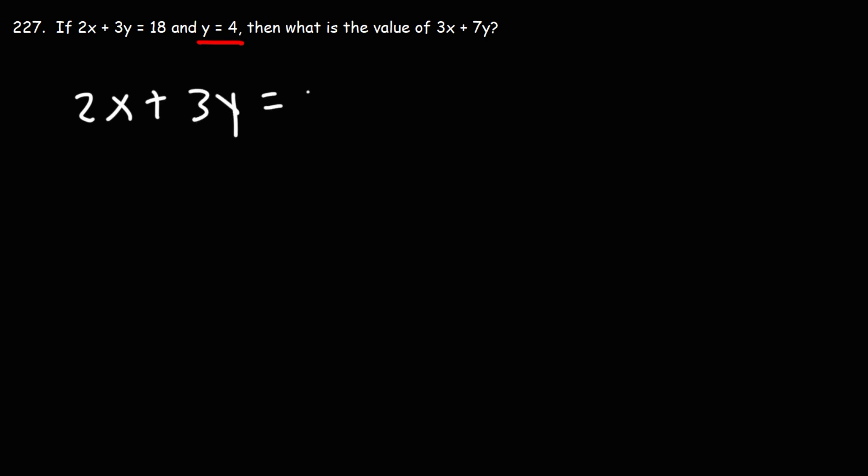We have 2x plus 3y is equal to 18. Let's replace y with 4, since that was given to us, and let's solve for x. 3 times 4 is 12.